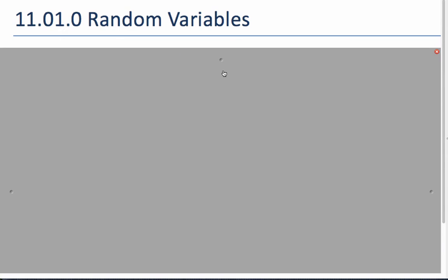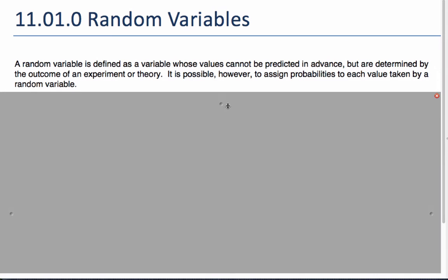So, random variables are defined as variables whose values cannot be predicted in advance, but are determined by the outcome of an experiment or theory. So, we know what they're going to be, but we cannot predict them. It is possible to assign probabilities to each value taken for a random variable. So, we can probably guess how much the temperature is going to be on a probability scale, but we never actually know what the temperature of the coffee would be.